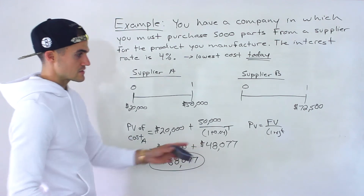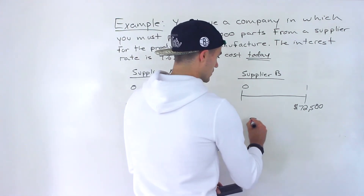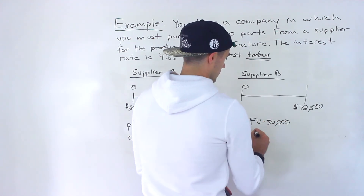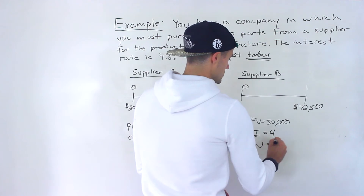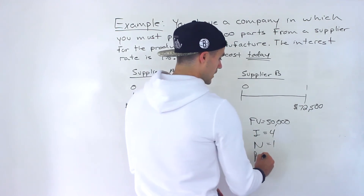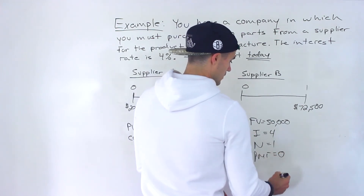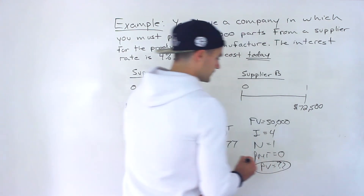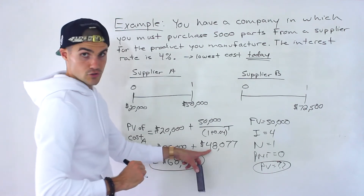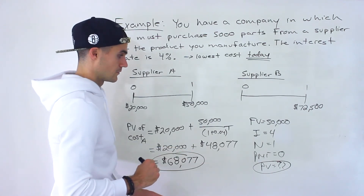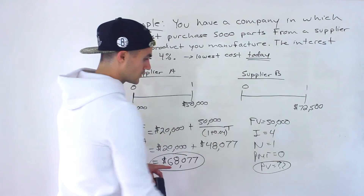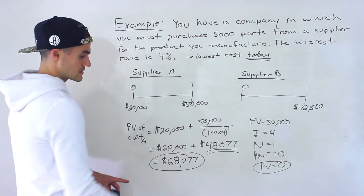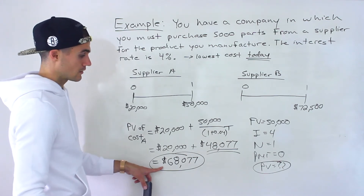If you wanted to get this value with the financial calculator, future value would be $50,000, the interest rate is 4%, we're present valuing it for one year, and there are no other payments in between. Solve for PV and you should get $48,077. Then add the $20,000 today — whichever way you do it, manually or with the financial calculator, that's the present value of the cost for supplier A.